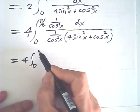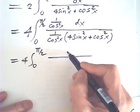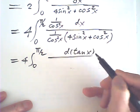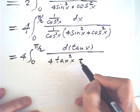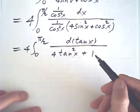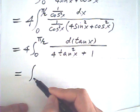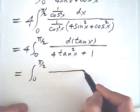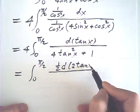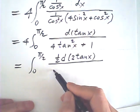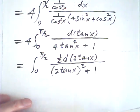This is equal to 4 from 0 to half π. This will be secant square, this is d tangent. This is 4 tangent square plus 1. Now I try to make the variable consistent, so this one is equal to 0 to half π, one half d of 2 tangent x, over 2 tangent x squared plus 1.